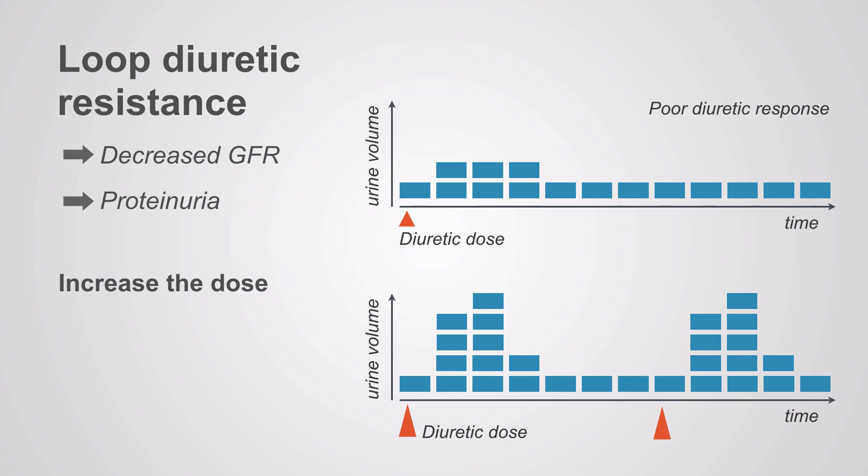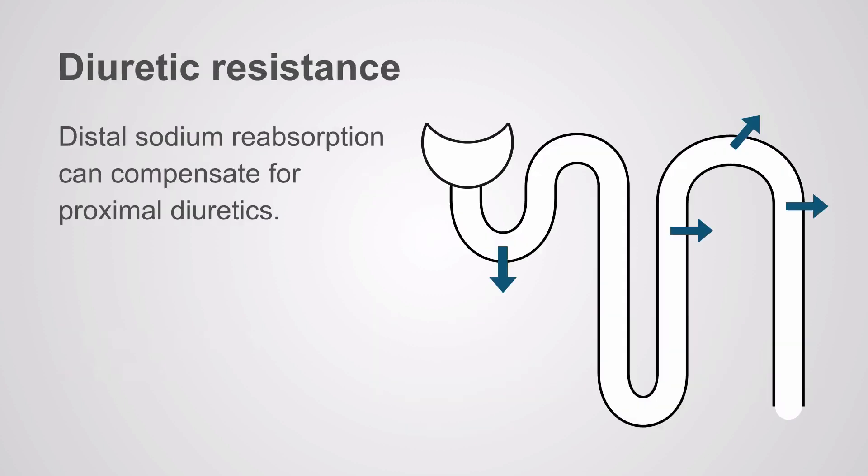The best response to this type of resistance is to increase the dose. By increasing the dose, you can overcome the decrease in GFR. What I've found to be effective is increasing the furosemide to 20 times the serum creatinine to get an effective dose.